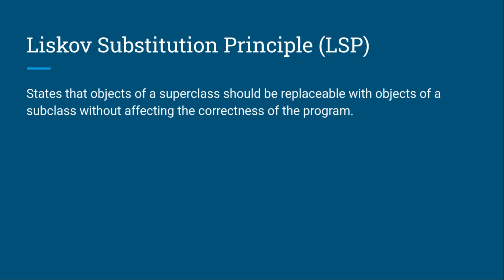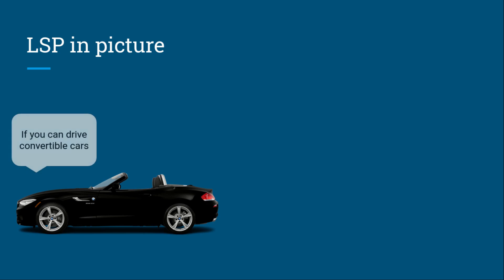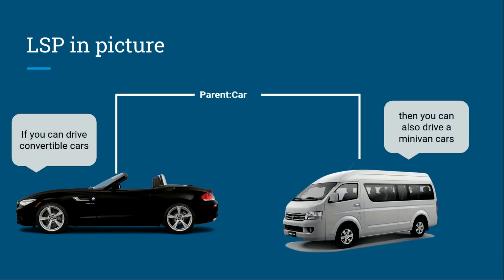Now let's look at the Liskov Substitution Principle. It states that objects of a superclass should be replaceable with objects of a subclass without affecting the correctness of the program. If a class is a subtype of another class, it should be usable interchangeably with its parent class without causing any issues or breaking any functionality. For example, if you can drive a convertible car, you can also drive a minivan, because all cars share a base model with a transmission and an engine.